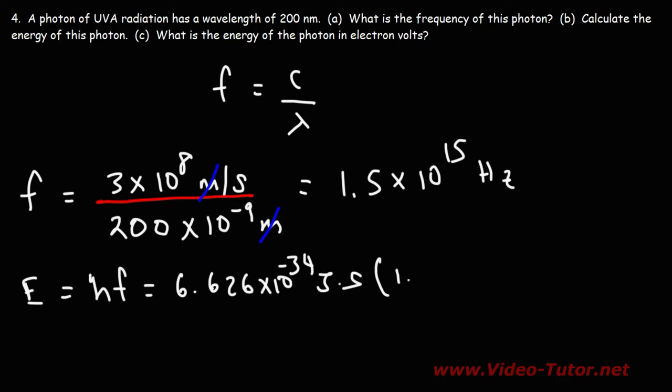Now let's find the energy of the photon in electron volts. One electron volt equals 1.6 times 10 to the negative 19 joules. We divide our answer by this conversion factor, which gives us 6.2 electron volts. A UVA photon with a wavelength of 200 nanometers has the same energy as an electron accelerated through 6.2 volts.